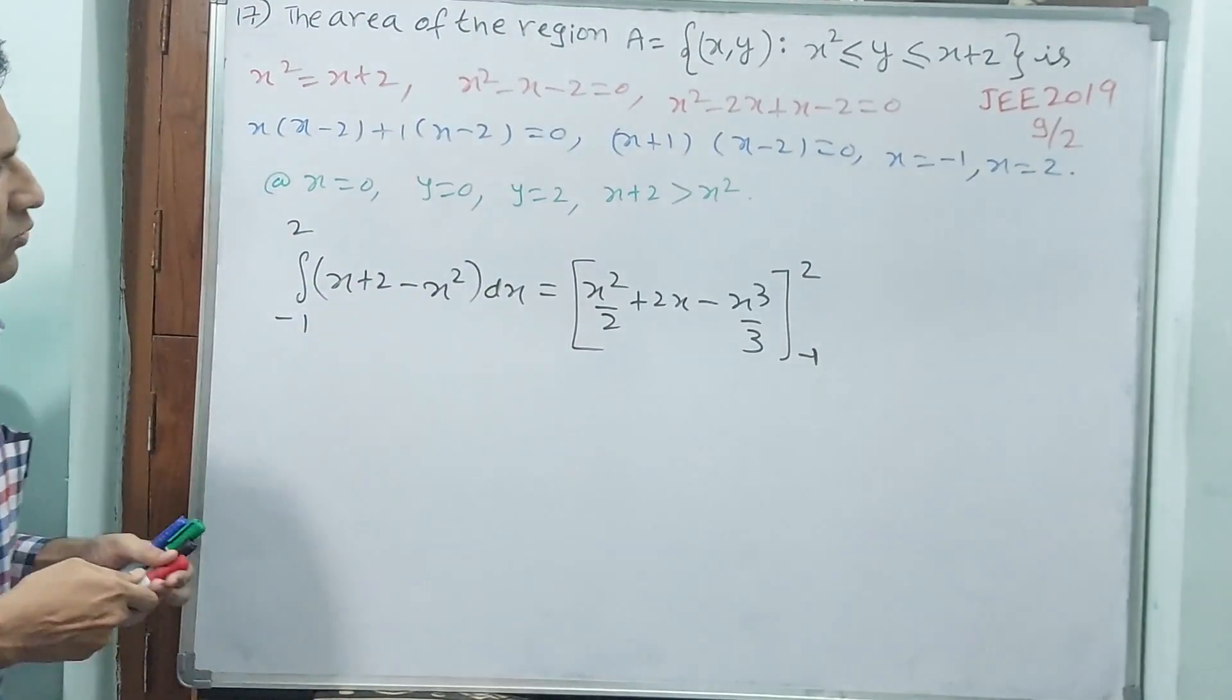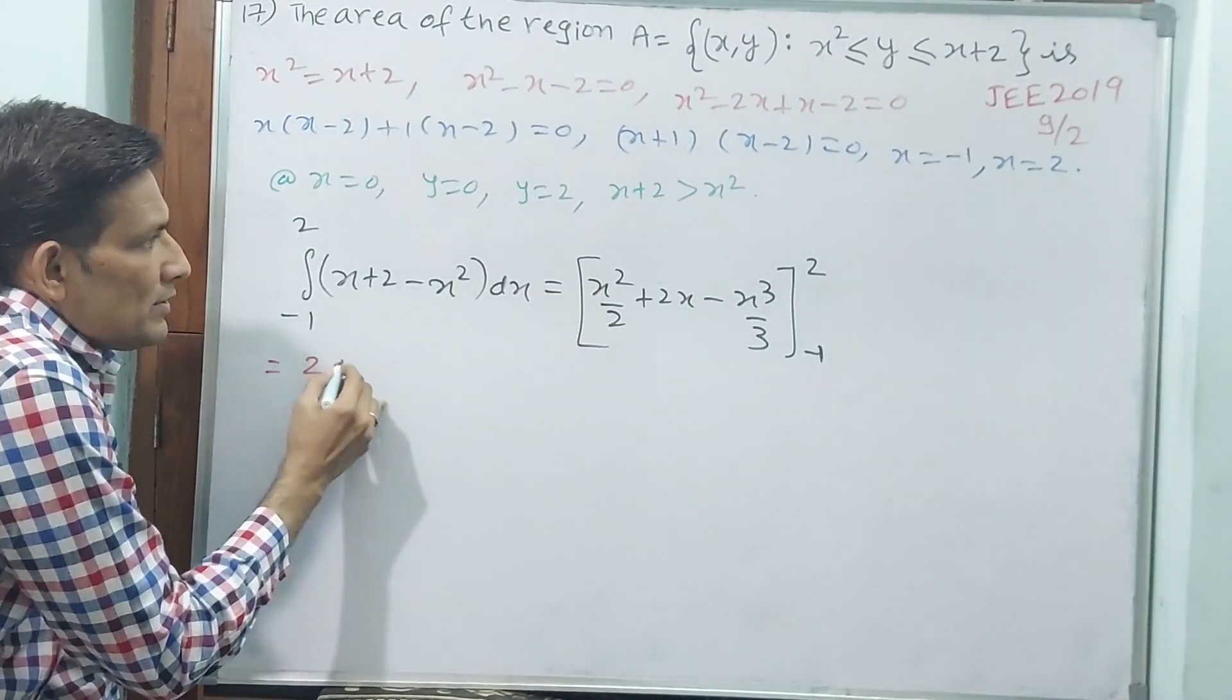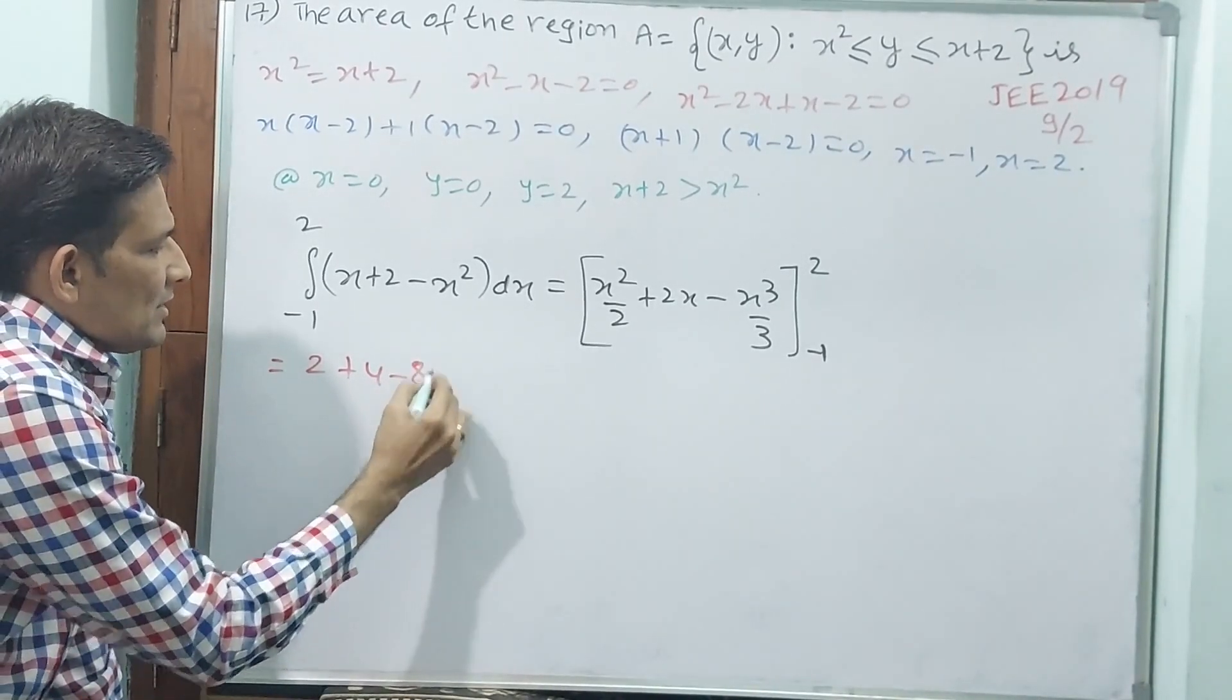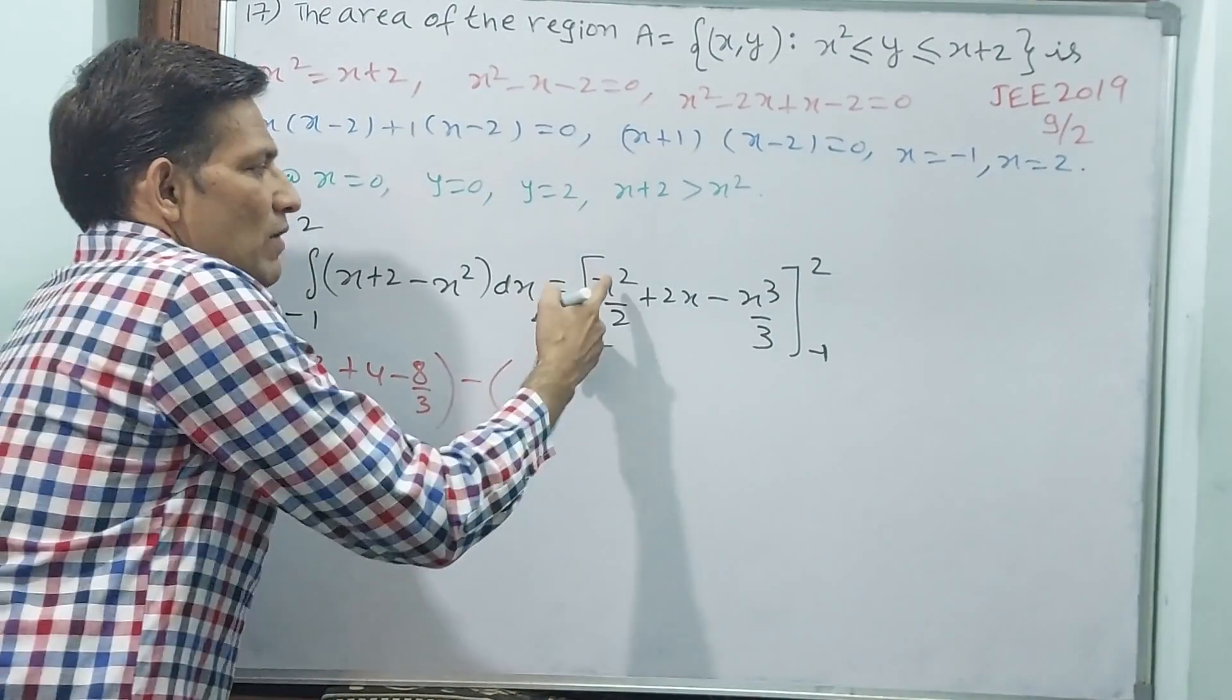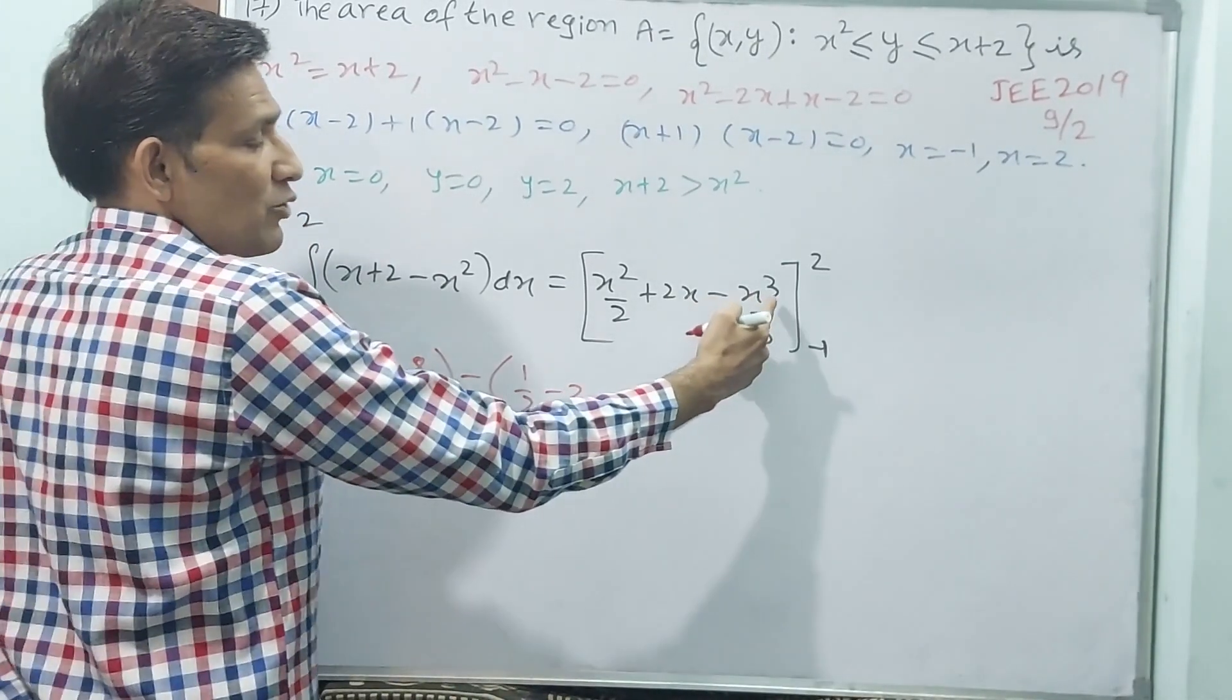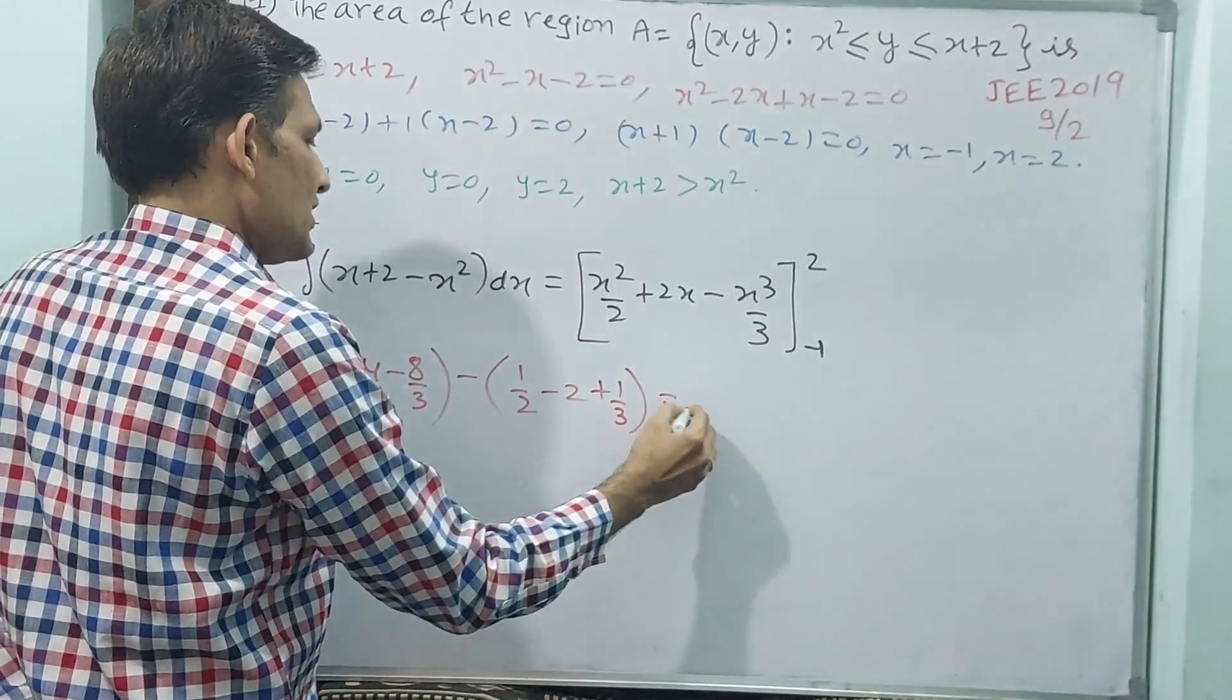Now we have both values. 2 if you do, 2 square, 4 by 2, that's 2, plus 2 into 2, that's 4, minus 2 cube, 8 by 3, upper limit minus lower limit. Minus 1 if you do, minus 1 square, 1 by 2, minus 1 into 2, minus 2, minus 1 cube, minus 1, minus or minus plus, plus 1 by 3.